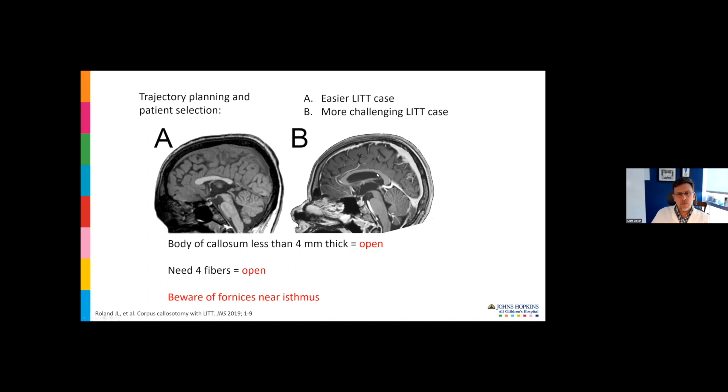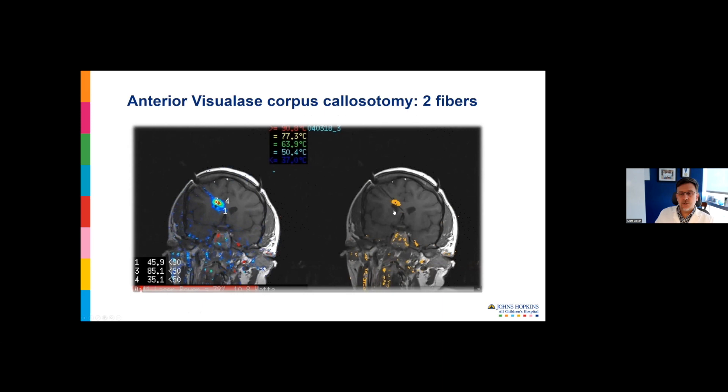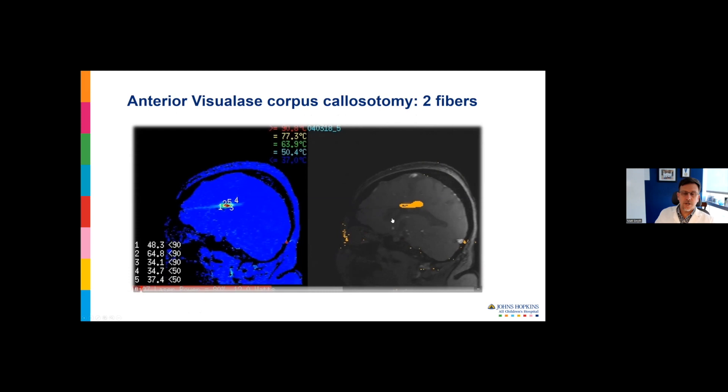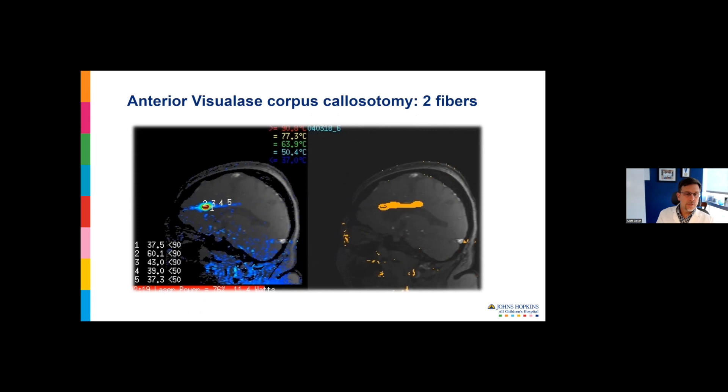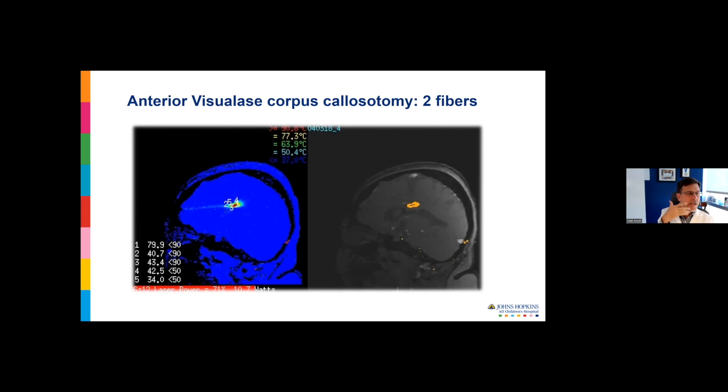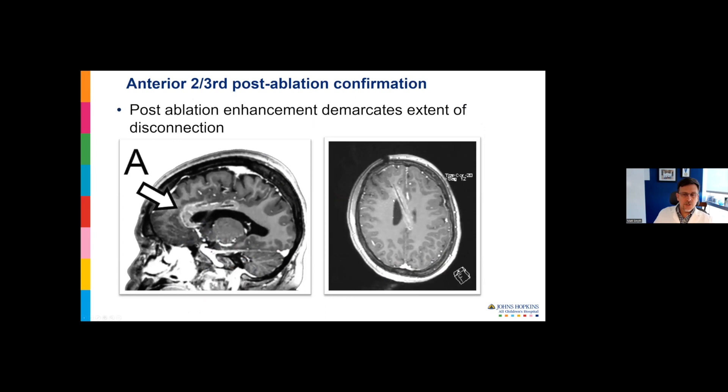I haven't done any four fiber complete callosotomies. There are those that advocate doing multiple fibers, but I think you start to get diminishing returns once you get higher than three to four fibers. Each one has a risk with placement and prolongs the procedure. Also, the fornices are sweeping up right around the isthmus of the callosal body near the midline. If you're doing your isthmus ablation near the midline, you risk thermal injury to the fornices. I often plan my trajectory so the fiber passes this area parasagittally.